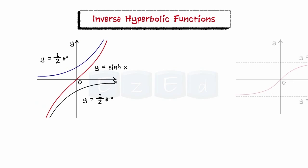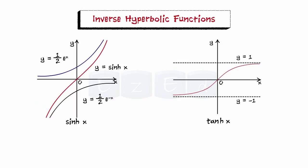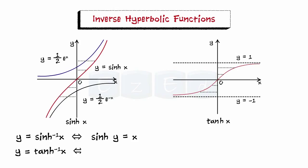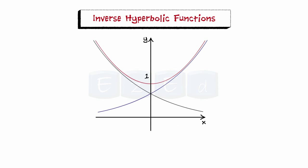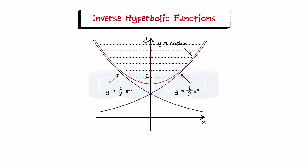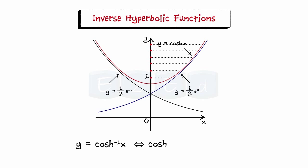Let us go back to the graphs of sinh x and tanh x. From the graphs, sinh and tanh are one-to-one functions, so they have inverse functions denoted by sinh⁻¹ and tanh⁻¹. Similarly, y = tanh⁻¹x if and only if tanh y = x. The graph of cosh x shows it is not one-to-one; however, when restricted to the domain [0, ∞), it becomes one-to-one. The inverse hyperbolic cosine is defined as the inverse of this restricted function, so y = cosh⁻¹x if and only if cosh y = x. The remaining inverse hyperbolic functions are defined similarly.